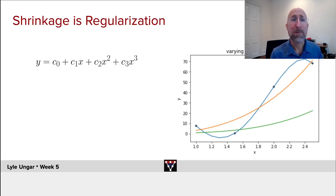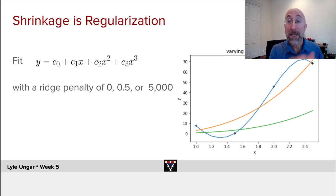But maybe we should do some shrinkage. So let's fit that model again using a ridge penalty. If you use a ridge penalty of a moderate amount, 0.5, you get the orange line, nice and smooth. It looks like a decent approximation to a cubic.